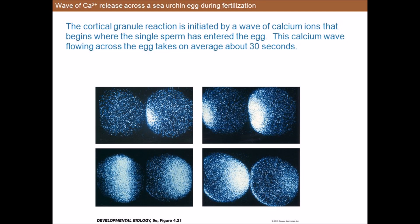In sea urchins and mammals, the rise in Ca²⁺ concentration responsible for the cortical granule reaction is not due to an influx of calcium into the egg, but rather comes from within the egg itself. The release of calcium from intracellular storage can be monitored visually.